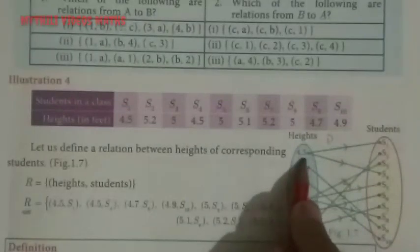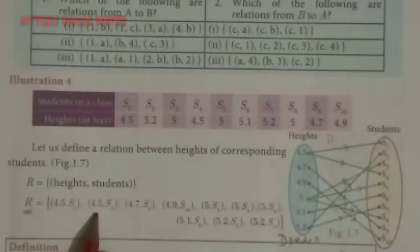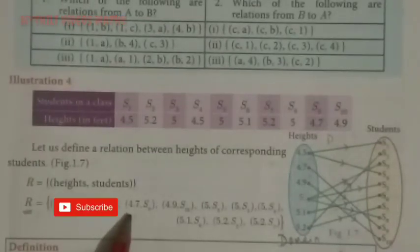Here is 4.5 and S1. So this is the first relation: (4.5, S1). Same thing: (4.5, S4), (4.7, S3), like this.